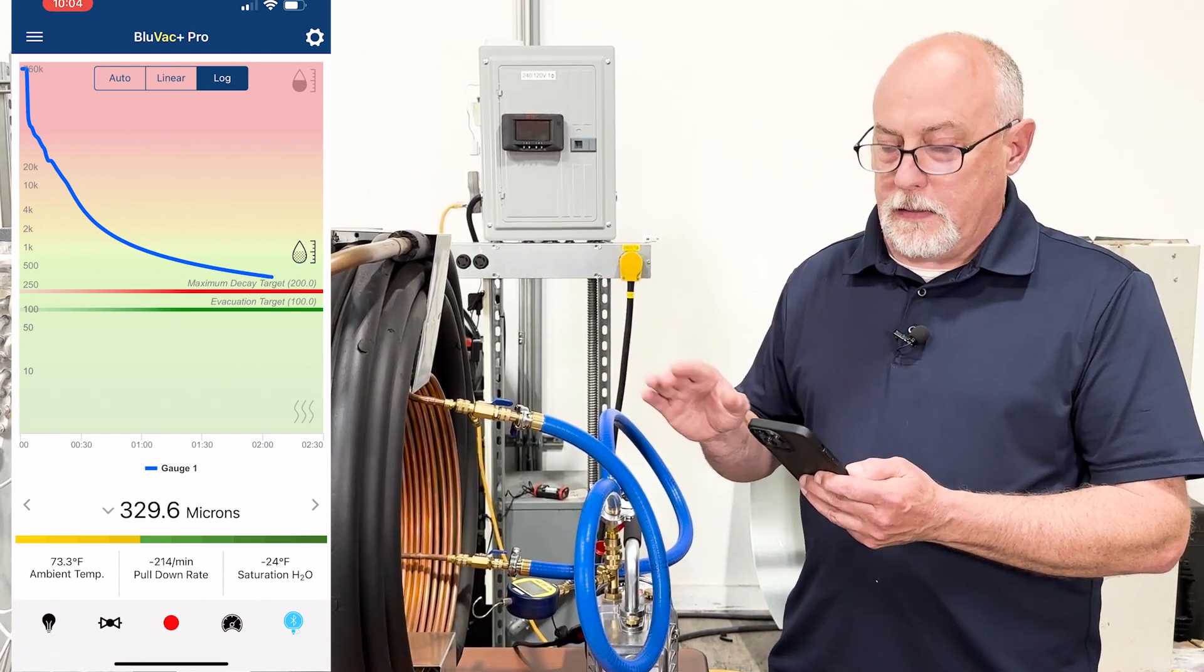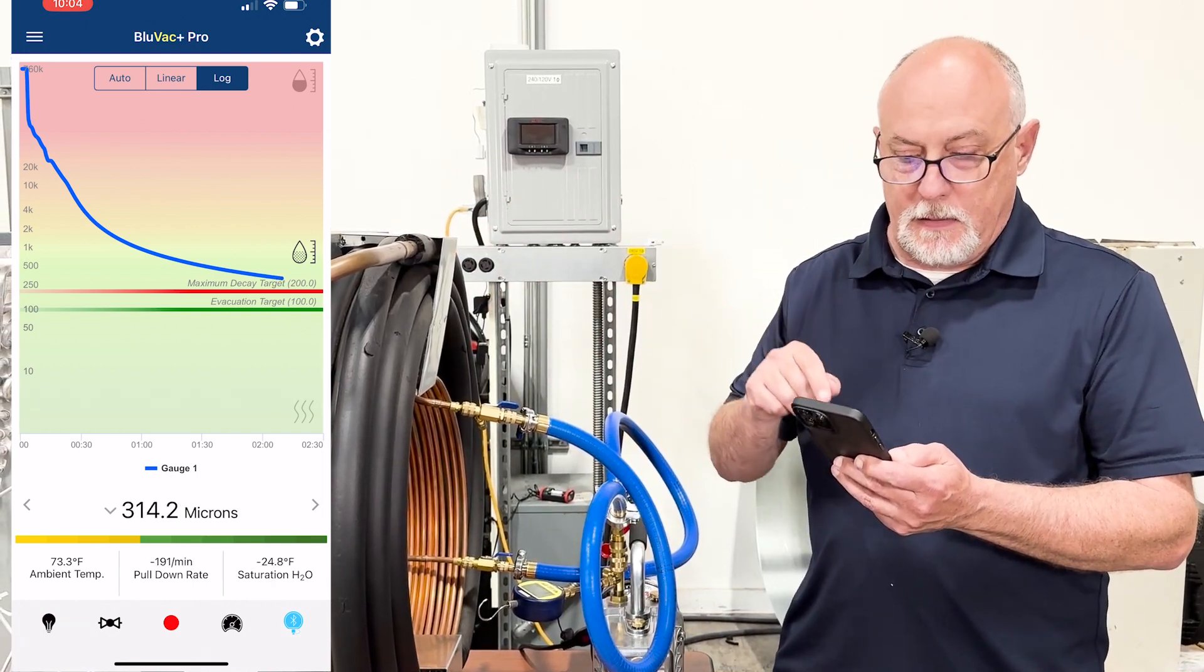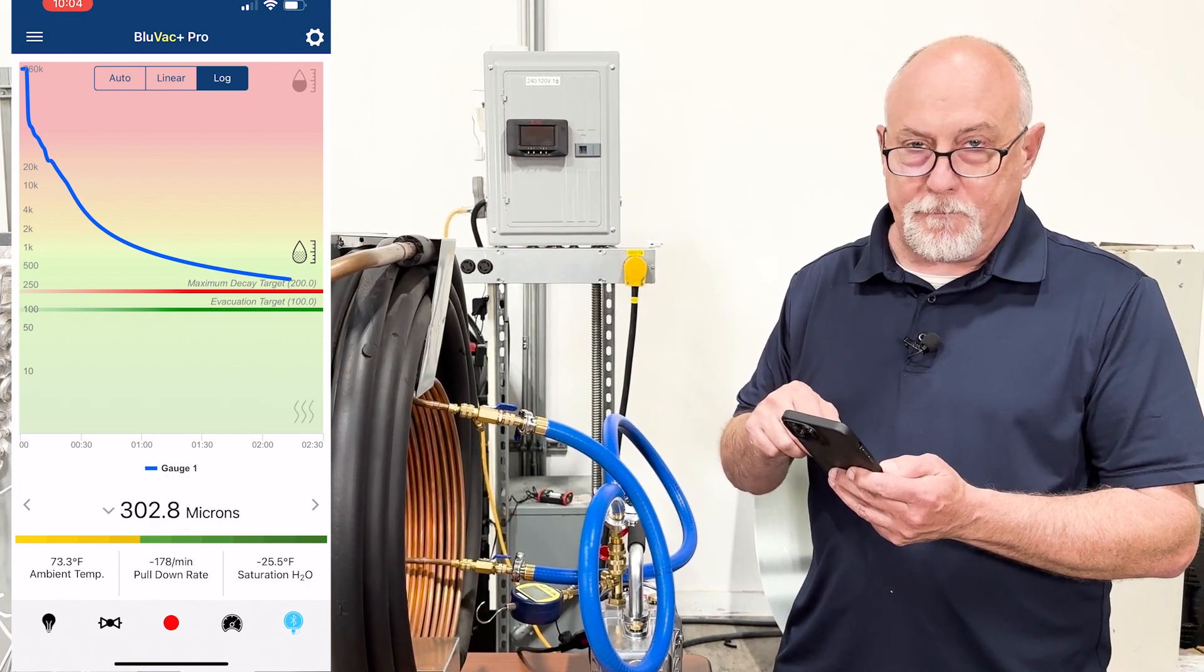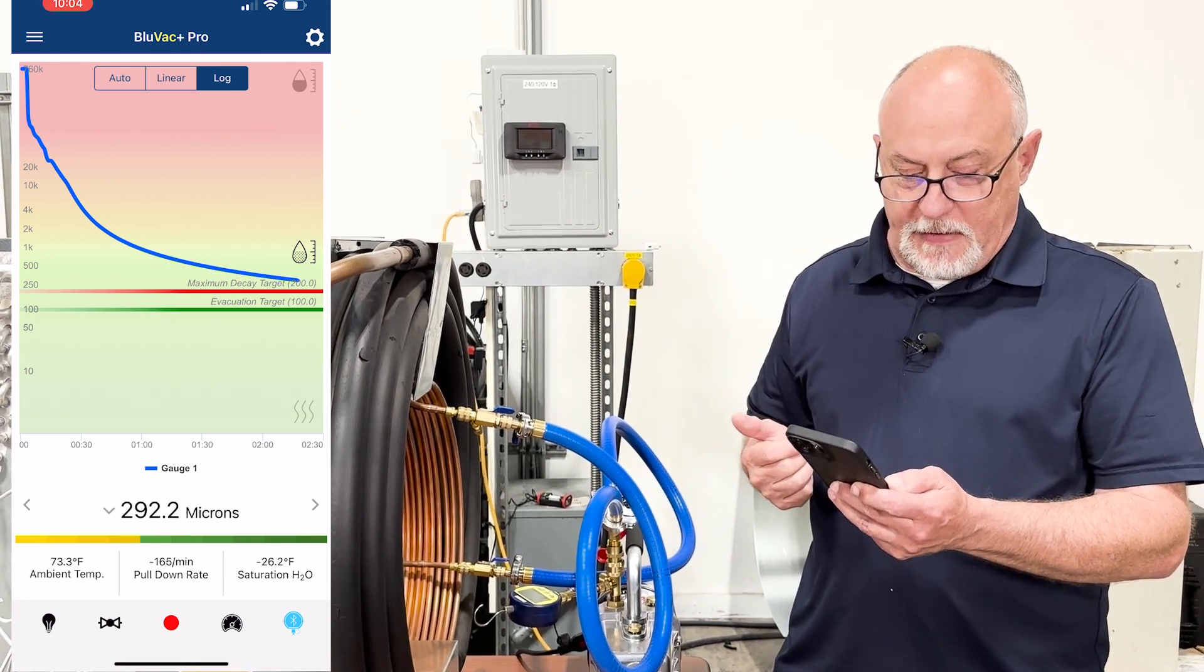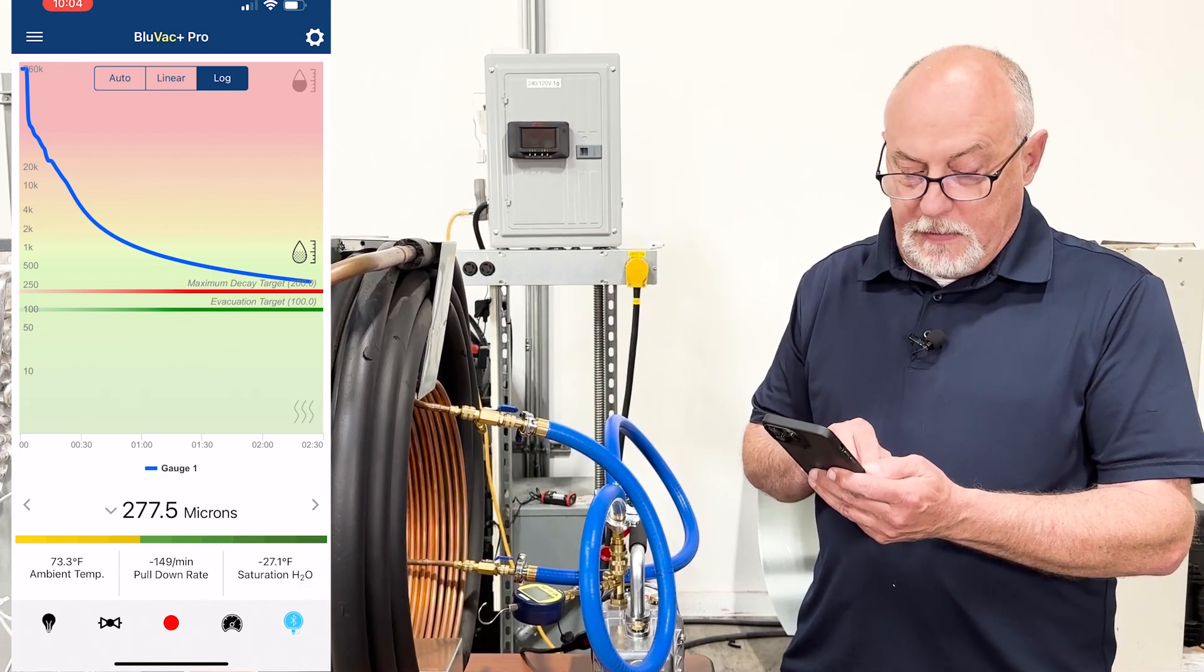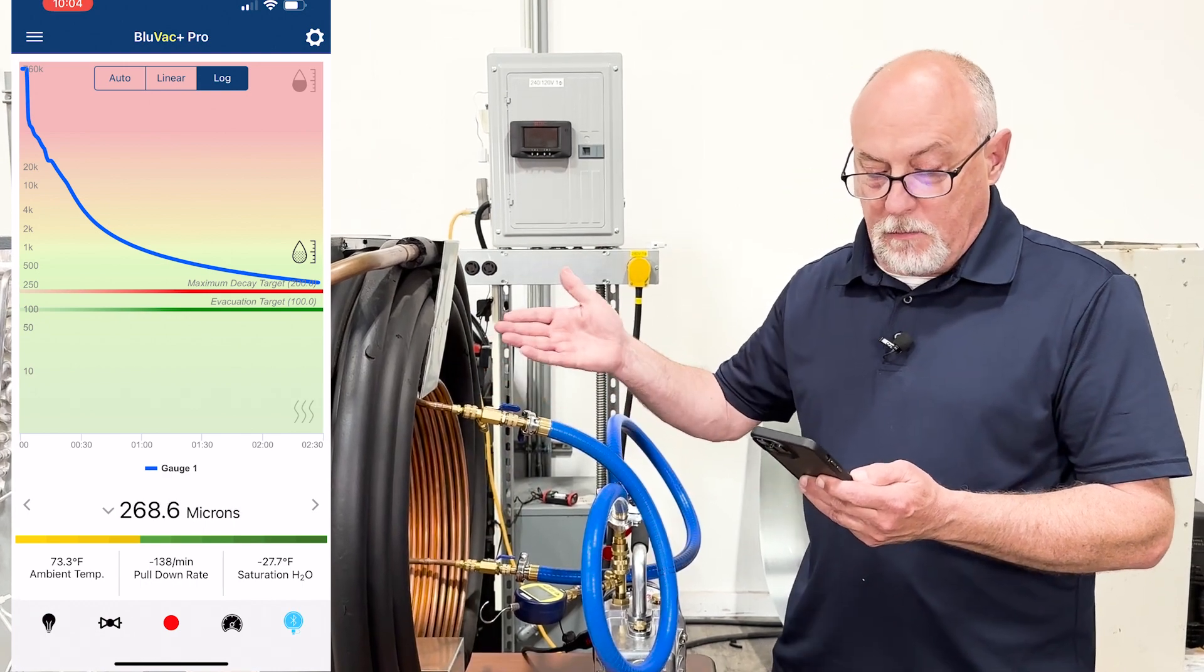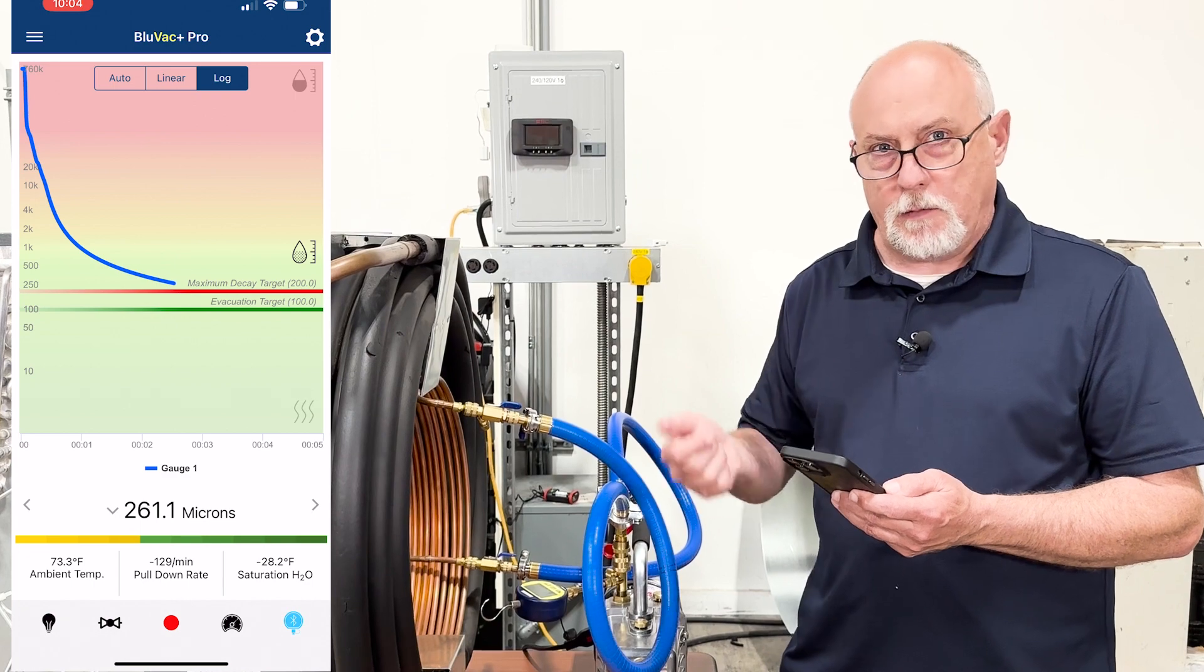One quick note, this app is bi-directional communication with this gauge. So when I program it through the app, I send that data back to the gauge so it'll walk us through that evacuation process. Across the bottom here, you can see we have a little symbol for a valve. And that valve is right now indicating that these two core tools are open and we're pulling on a proper evacuation. So let's just go for a minute and we'll be right back.